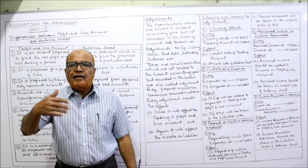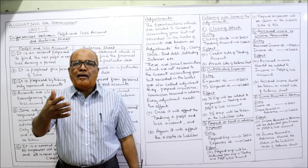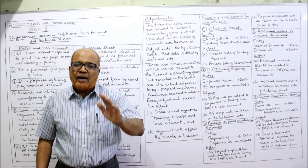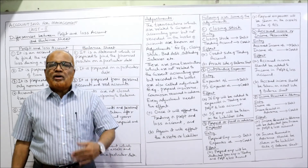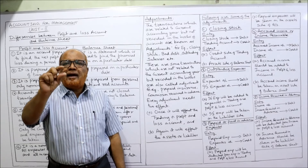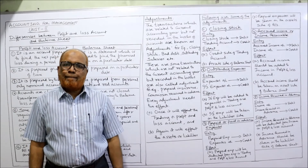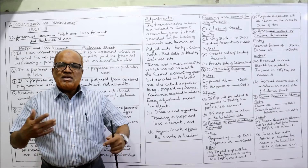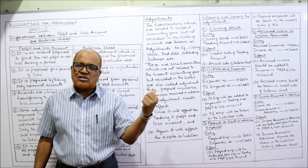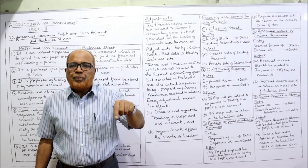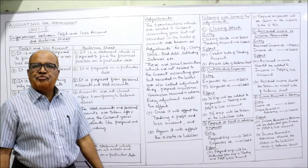Next adjustment is prepaid, or paid in advance — also very frequently appearing. Prepaid means paid in the current year but the amount does not relate to the current year; it relates to the next year. The entry is: Prepaid Expenses Account debit, Expenses Account credit. The effect is: prepaid expenses are deducted from expenses in the trading and profit and loss account, and the prepaid expenses are taken on the asset side of the balance sheet.